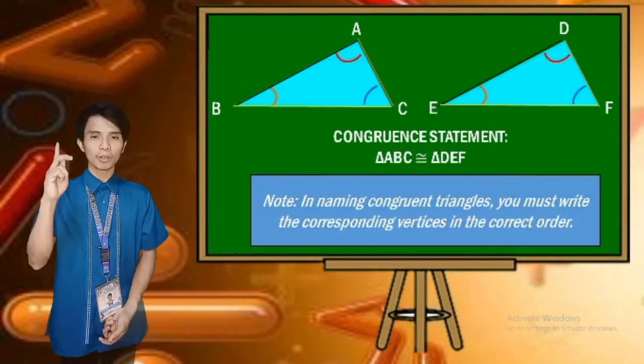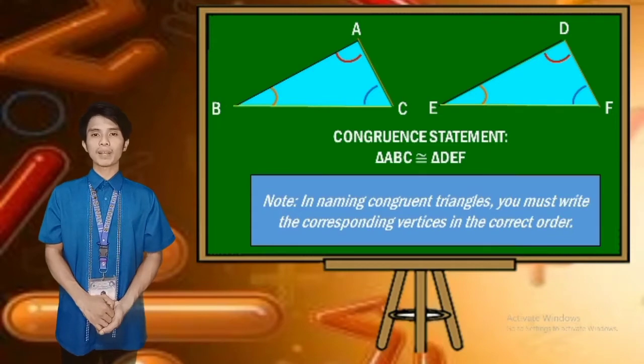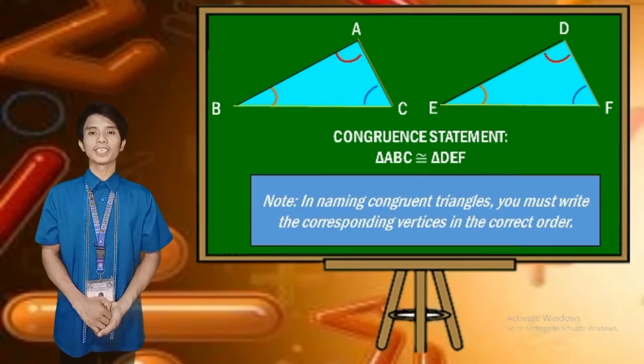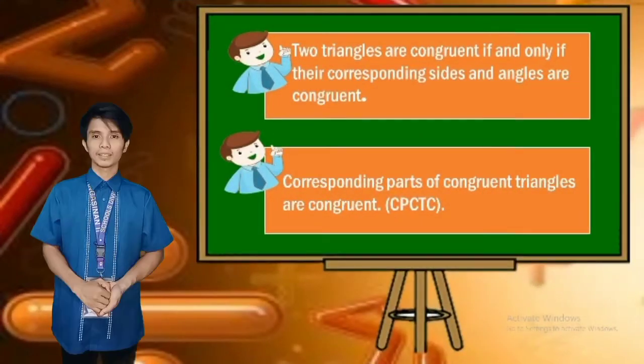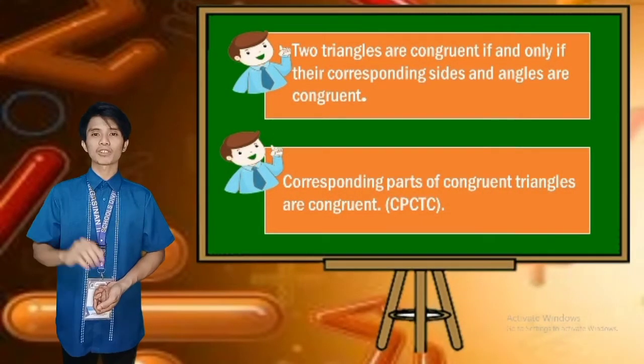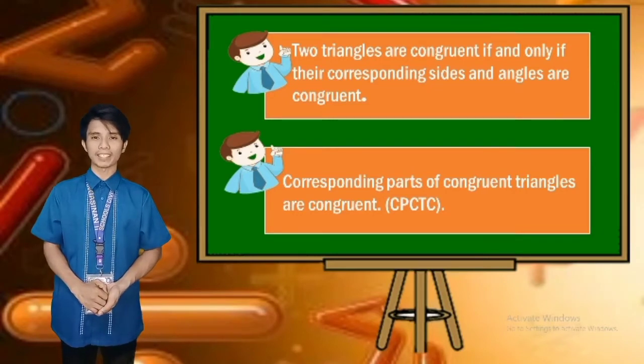Take note, in naming congruent triangles, you must write the corresponding vertices in correct order. Two triangles are congruent if and only if their corresponding sides and angles are congruent.